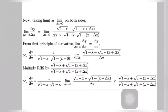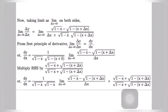Now we take the limit as del x tends to 0 on both sides. Del x tends to 0 means the change in the value of x is so small that del x is very close to 0. So the limit del x tends to 0 of del y by del x equals the limit del x tends to 0 of root under 1 minus x minus root under 1 minus x plus del x, all divided by del x times root under 1 minus x times root under 1 minus x plus del x.